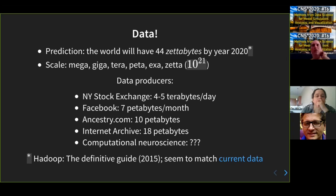If you've never heard of 'zetta,' you may be familiar with giga and tera. When you go to high performance computing you get to peta, and zetta comes above that — it's a standard exponent of 21. Some example data producers: Facebook creates 7 petabytes per month, stock exchanges 4 terabytes per day, ancestry.com holds 10 petabytes, and the Internet Archive keeps 18 petabytes of old web pages.